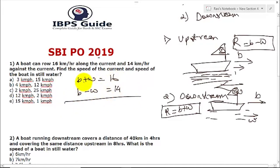It is very simple. Just add these two equations. This and this will get cancelled. 2b will be 30, so b will be 15. So boat speed is 15. Current speed will be 16 minus 15, which is 1. So the value would be 1.